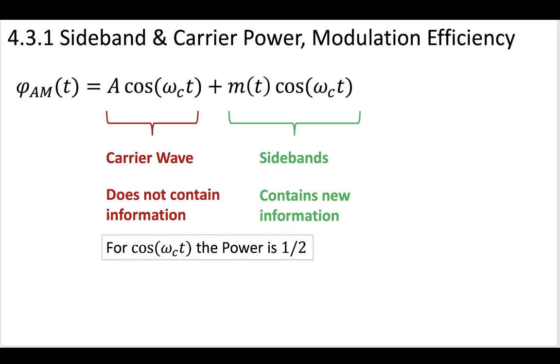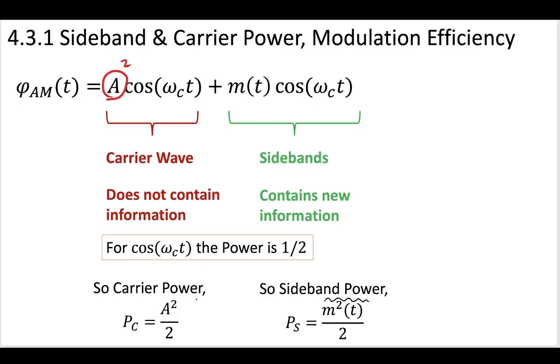So for the cosine at our omega t frequency, the power is going to be equal to one half. For these parts of the wave, we're going to have a power that's equal to one half. So this means that the carrier power is going to be A squared over 2. So this is the coefficient squared multiplied by this one half. And then for the sideband, we're going to have the time averaged mean of the message divided by one half, where that one half comes from this cosine wave.